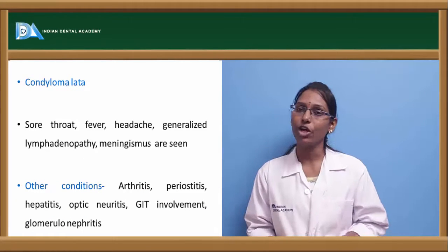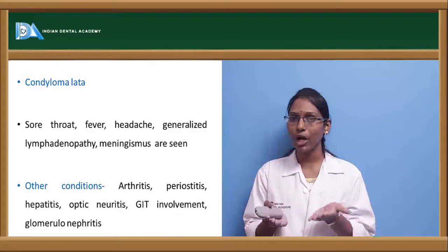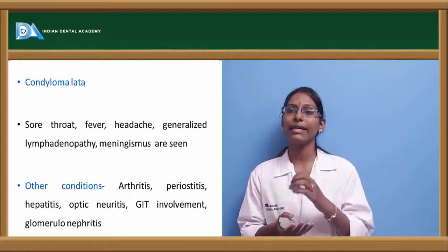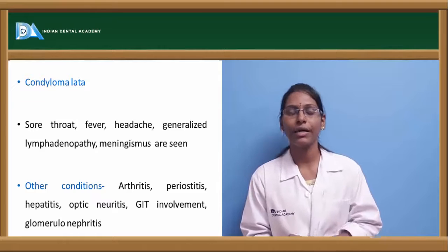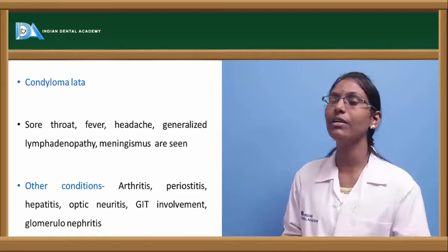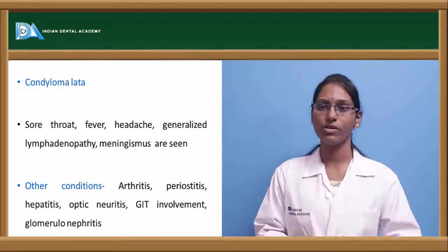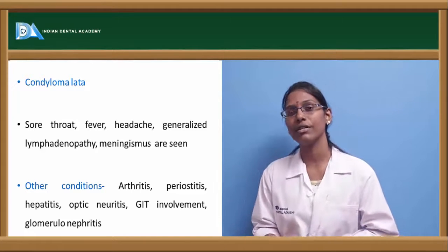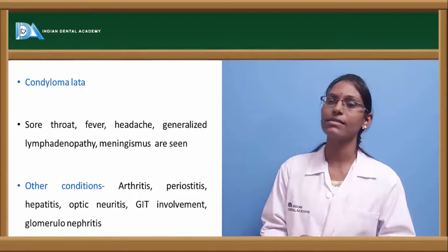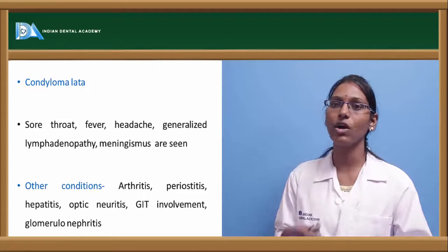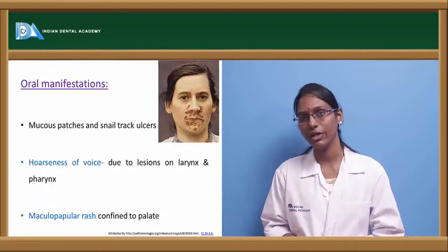A pathognomonic feature of secondary syphilis is condyloma lata — a broad-based, wart-like plug lesion present in the oral cavity or site of inoculation. Patients manifest with sore throat, fever, malaise, and generalized lymphadenopathy. Meningismus can also be seen. Other conditions include arthritis, periostitis, hepatitis, and optic neuritis. GIT involvement and kidney involvement leading to glomerulonephritis can also occur.